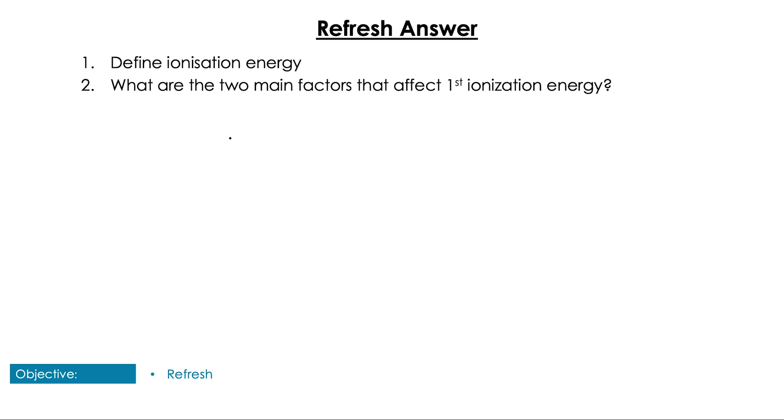Hopefully you remembered that ionization energy is the energy required to remove one electron from one mole of a gaseous atom. There are two main factors that influence that: the principal quantum number, also known as the number of shells an atom has, because that increases the distance from the nucleus, and there is also the charge on the nucleus itself, changing the effective nuclear charge.